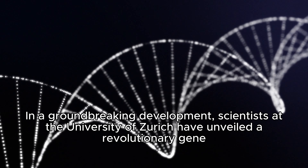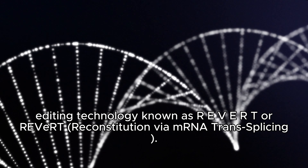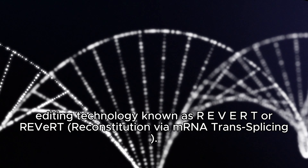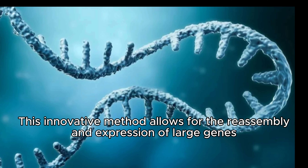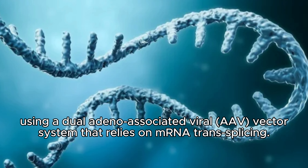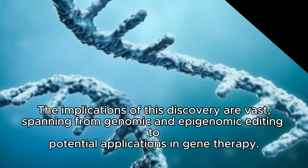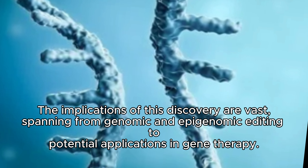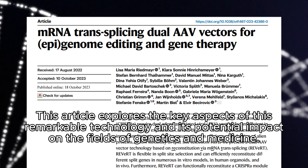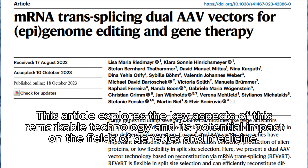In a groundbreaking development, scientists at the University of Zürich have unveiled a revolutionary gene editing technology known as REVRT, or Revert Reconstitution via mRNA transplicing. This innovative method allows for the reassembly and expression of large genes using a dual adeno-associated viral (AAV) vector system that relies on mRNA transplicing. The implications of this discovery are vast, spanning from genomic and epigenomic editing to potential applications in gene therapy. This article explores the key aspects of this remarkable technology and its potential impact on the fields of genetics and medicine.